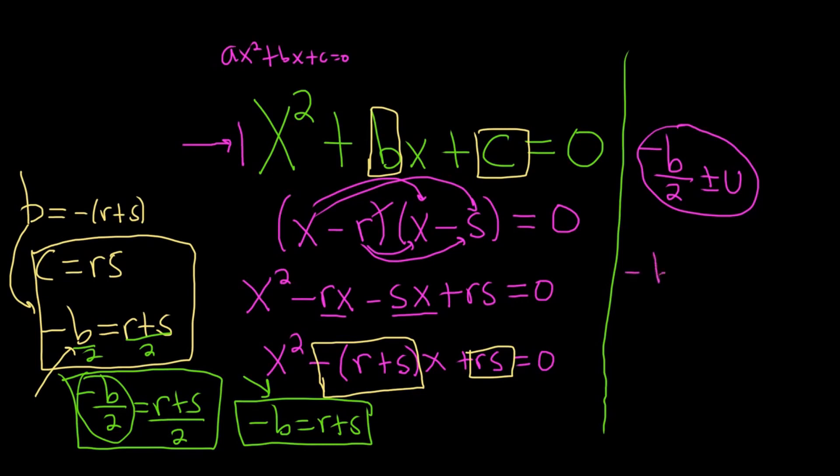So we know that the roots multiply to c, which is equal to rs. So we know the roots (-b/2 + u) times (-b/2 - u), we know those multiply to rs. I'm going to go ahead and call that c. And we're going to derive the quadratic equation using Po-Shen Loh's method. It's so cool.